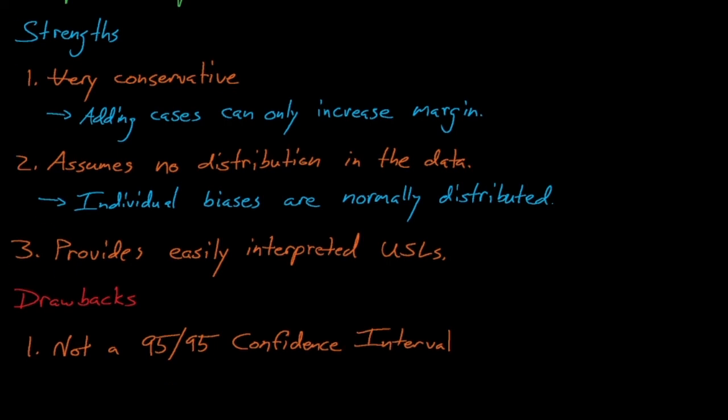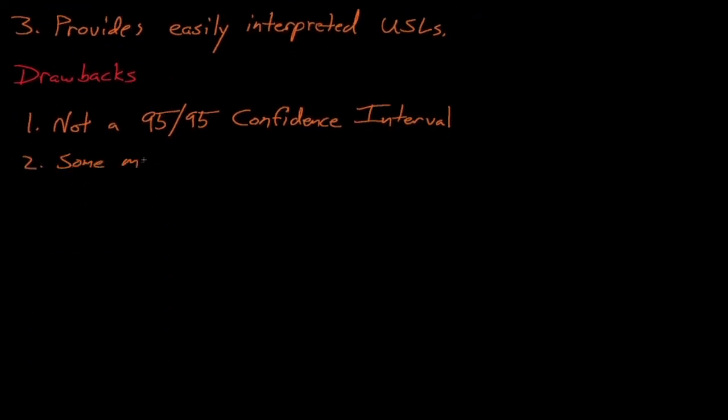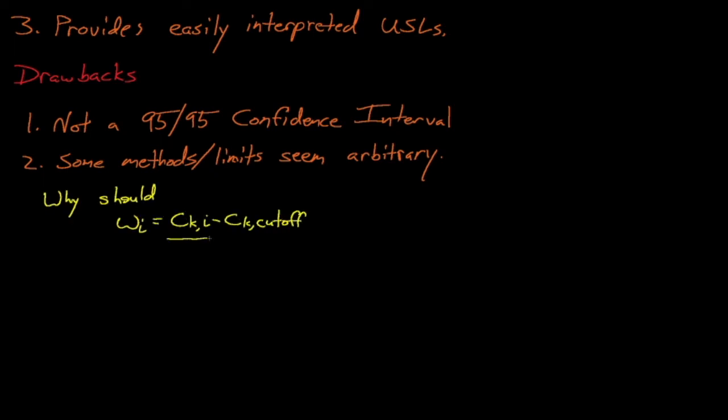The next and perhaps most noteworthy drawback to whisper is that some of its methods and limits seem arbitrary. There's no strong theoretical reasoning for why each benchmark's weight should be given by this ratio of c-sub-k's, nor is there any justification for why the sum of the weights should equal 30. These limits were determined by Kudrowski and Brown through unpublished studies when they developed whisper, and there may be a research opportunity to better understand the rationale behind these limits.